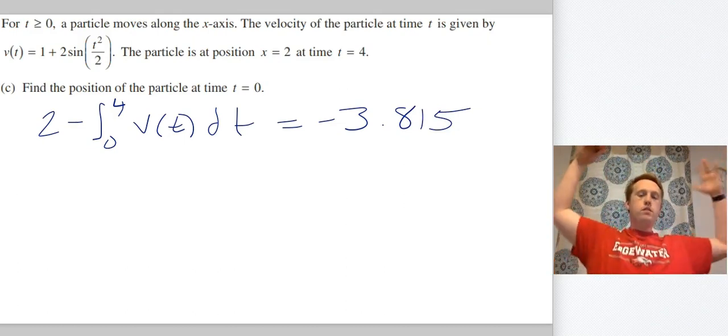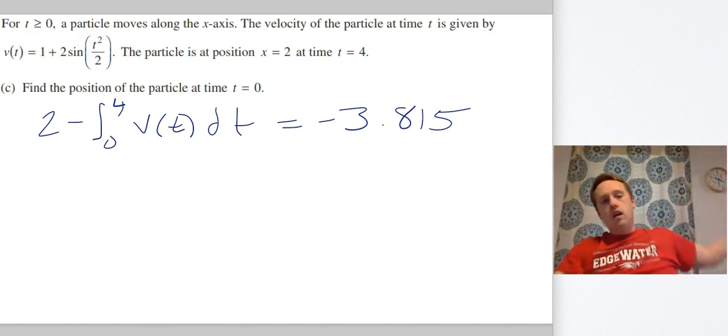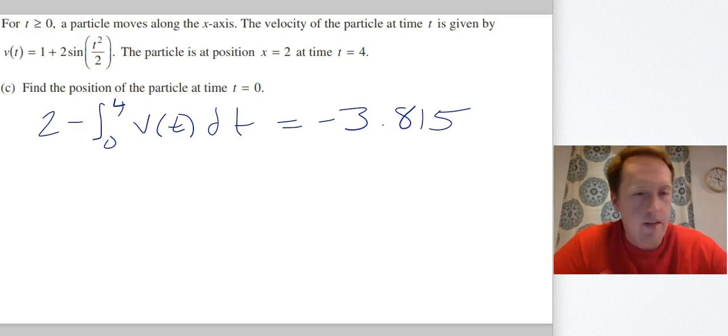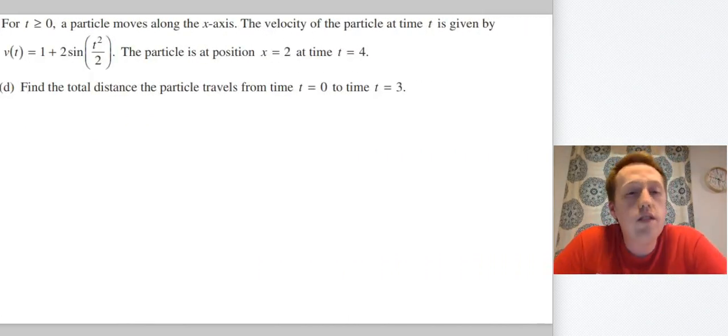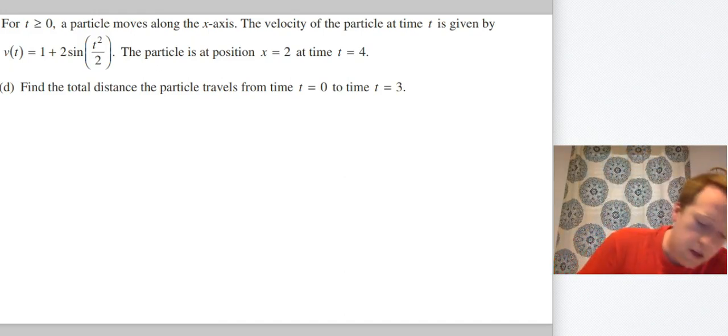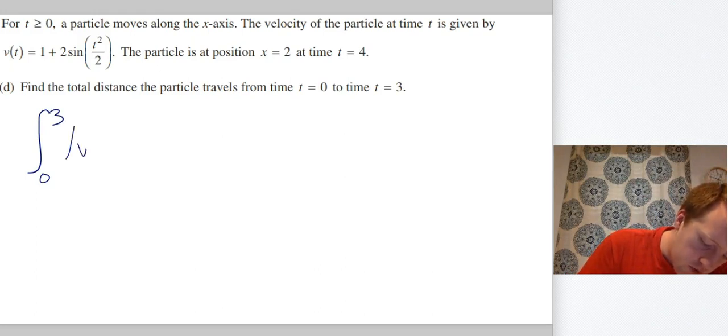All right, part D: find the total distance the particle travels from time t = 0 to time t = 3. So total distance traveled, that is the integral from 0 to 3 of the absolute value of v(t) dt.